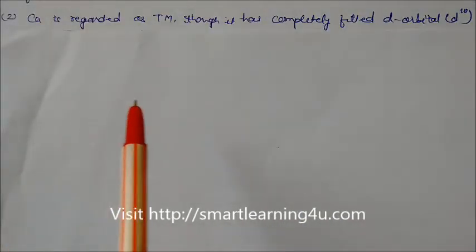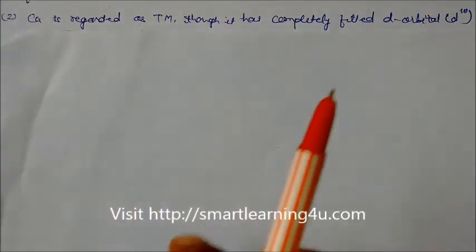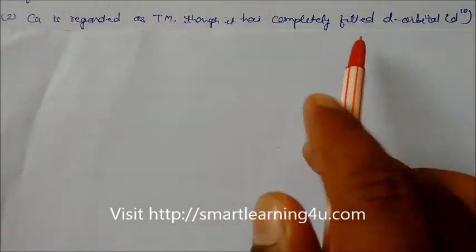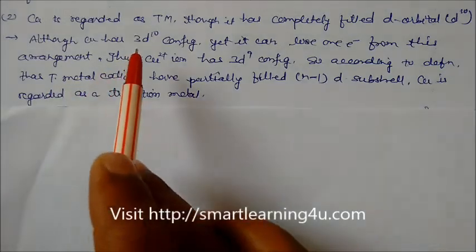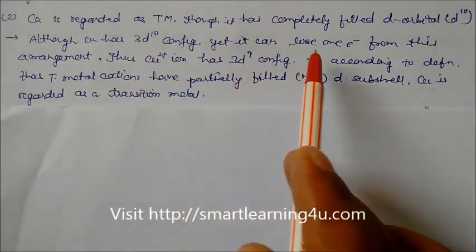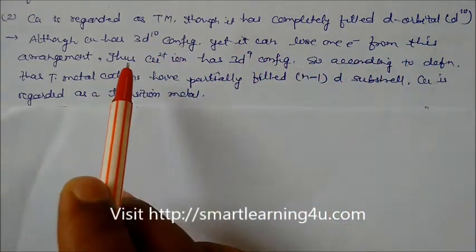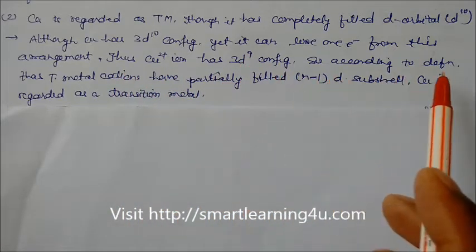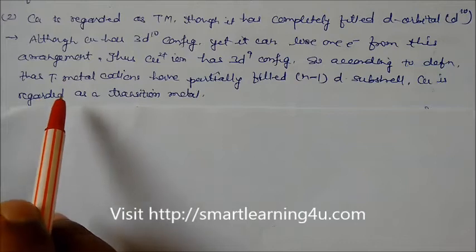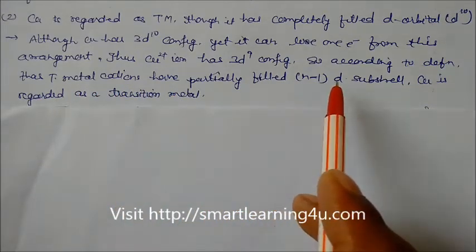Copper is regarded as a transition metal though it has complete d field, filled d orbitals. Although copper has 3d10 configuration, yet it can lose one electron from this arrangement. Thus copper 2+ ion has 3d9 configuration.